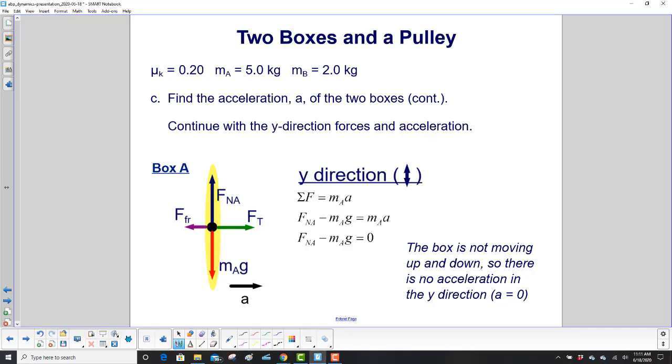Let's look in the y direction, the vertical direction for box A. We have the sum of the forces, m sub a times acceleration. We have the normal force. Notice we have a subscript there. Even though it's the only normal force, we'll keep it there anyway, just for good practice. Gravitational force is down, so it's negative. Our acceleration is zero. The box is not moving up and down, so there is no acceleration in the y direction. And we're going to need that this time, because we have to calculate the friction force. So we need the normal force.